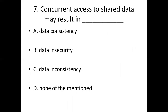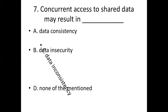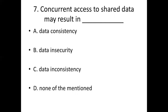Seventh bit. Concurrent access to shared data may result in dash. Option A: Data consistency. Option B: Data insecurity. Option C: Data inconsistency. Option D: Answer: Option C, Data inconsistency.